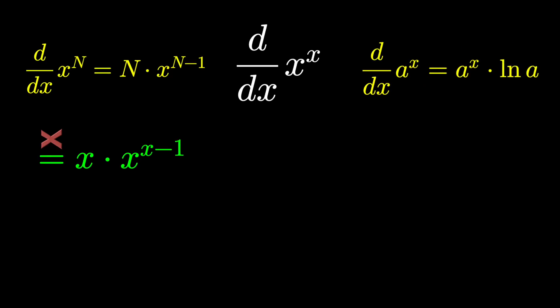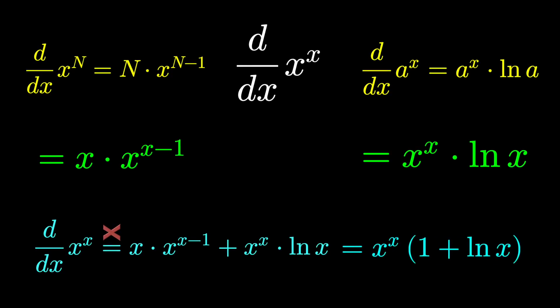namely that the derivative of a to the x is a to the x natural log a. So according to this, the answer should be x to the x natural log x. Maybe if you're not sure, we'll just add the two and get partial credit. Except that this solution turns out to be completely correct.